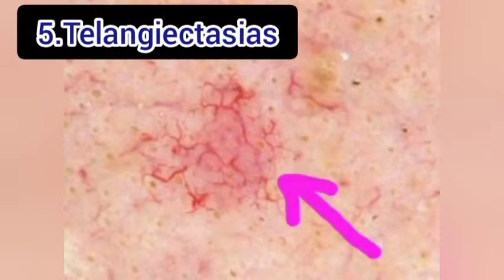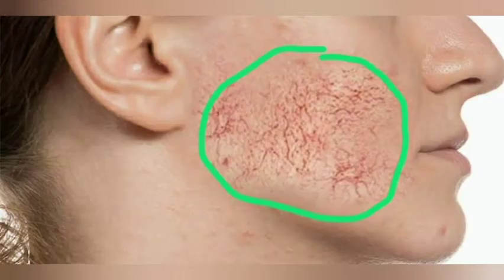Number 5: T for telangiectasia — that is dilatation of the capillaries causing red marks on the surface of the skin. It may occur on the face, palmar surface of the hands, and mucous membranes.